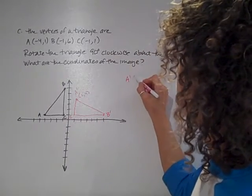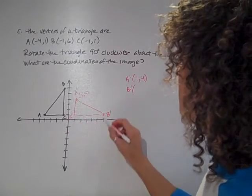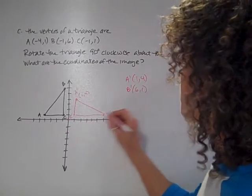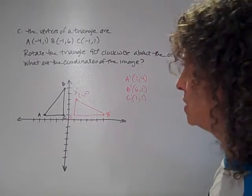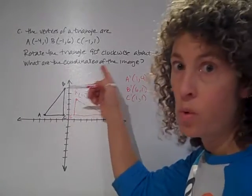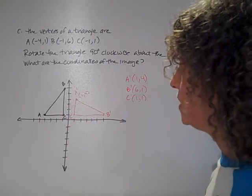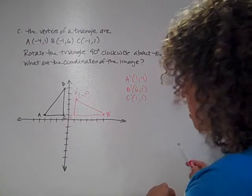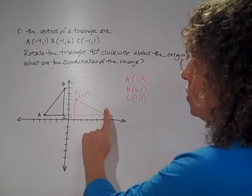So A prime was at (1,4). B prime was out here at (6,1). And C prime was at (1,1). So those are my new coordinates, which is what they wanted us to do. And I have seen what my figure looks like. And notice, it's just like when I rotated that paper. When I rotated the paper, I could see, oh, now it's over here.